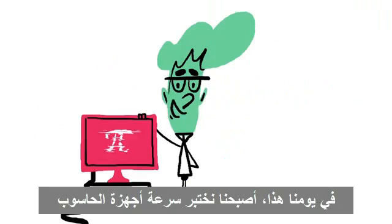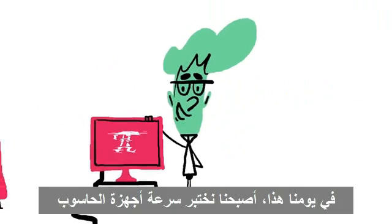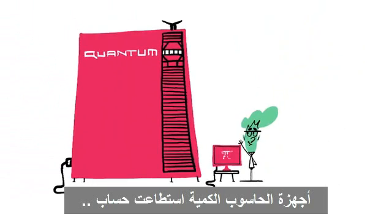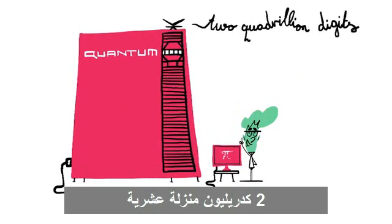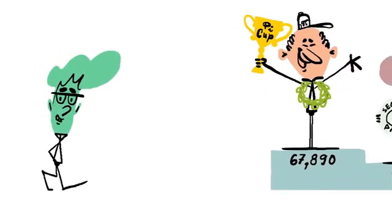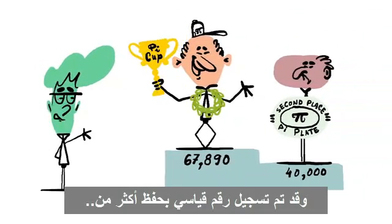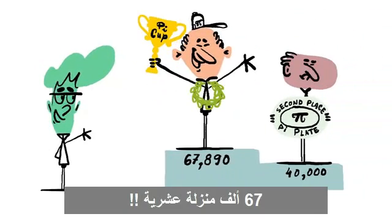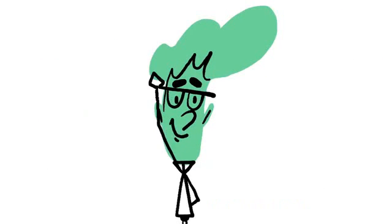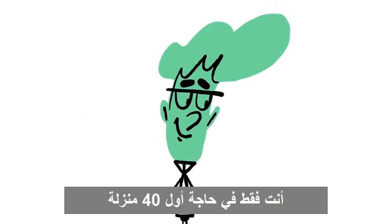Nowadays, we test the speed of computers by having them calculate pi, and quantum computers have been able to calculate it up to 2 quadrillion digits. People even compete to see how many digits they can memorize, and have set records for remembering over 67,000 of them. But for most scientific uses, you only need the first 40 or so.